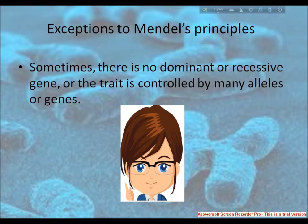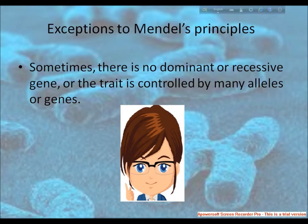Sometimes there is no dominant or recessive gene, or the trait is controlled by many alleles or genes. Incomplete dominance, also called partial dominance or semi-dominance, is a condition when neither allele is dominant over the other. This is recognized by the heterozygote expressing an intermediate phenotype relative to the parental phenotypes.